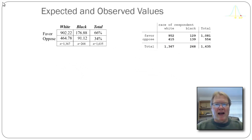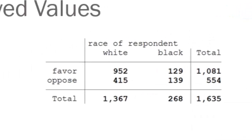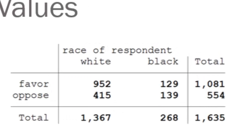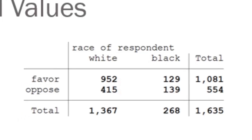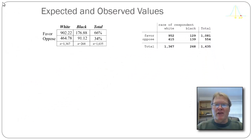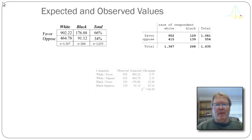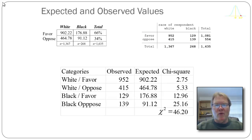Let's go ahead and calculate the chi-square statistic. On the right-hand side you can see the actual frequency of individuals in each category. The left-hand table has expected values under the null hypothesis assumption, and on the right-hand side I have the actual observed values. I'm going to create a table to organize my data for calculating chi-square.